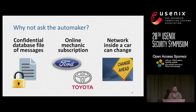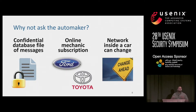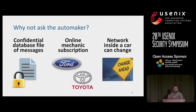The obvious straw man here is why not ask the automaker? The automaker has this information in a database file. However, this is strictly confidential — even companies that work with the automaker have a tough time getting this information. A mechanic's online subscription only tells you the wiring diagram of these ECUs, and at most gives you the number of ECUs in a car. And the reality is, the network inside a car is constantly changing, as we've seen from our three scenarios.